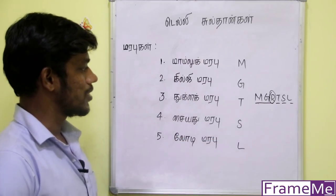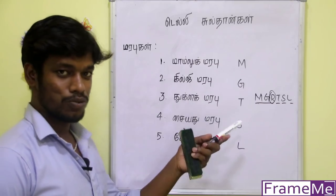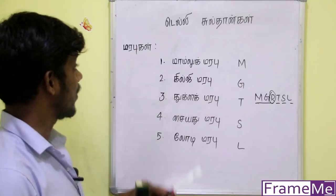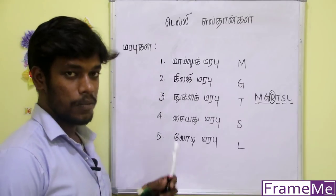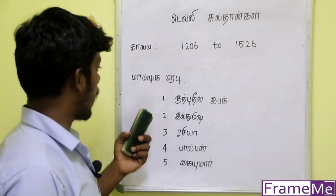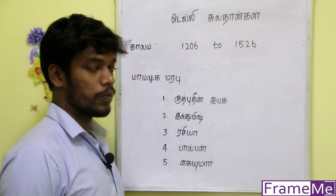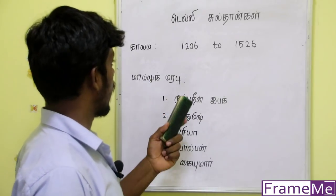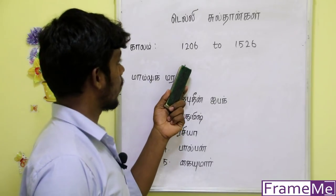Let's talk about MgRTSL. Let's go to the third row — how do you see the 4th row in the first row?